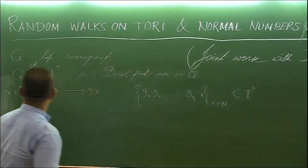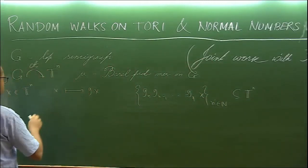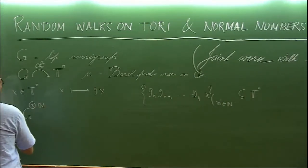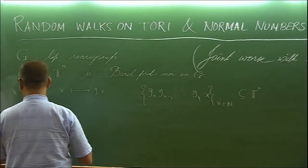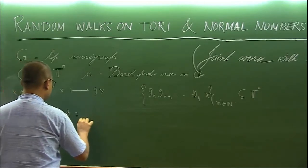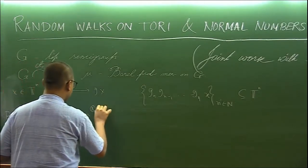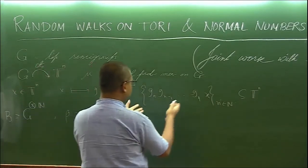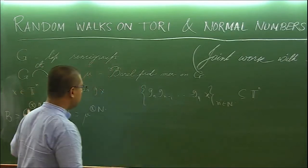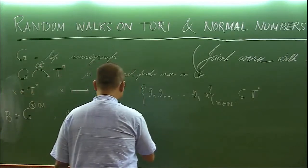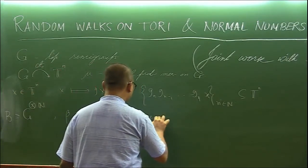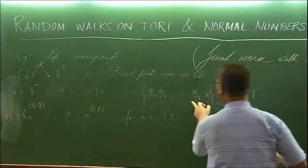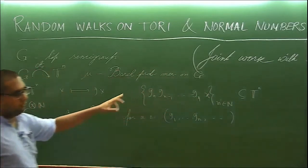More formally, we consider the Cartesian product of infinitely many copies of G and define beta to be the product measure. So what we want to study is precisely this: for any x, for almost every sequence, this is precisely what we want to study.